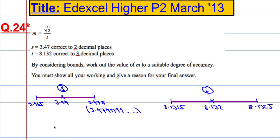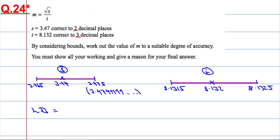and the lowest value it could have been is 8.1315. Let's see what happens when we work out m using the lower bounds. So when we use the lowest bounds, that's the smallest value it could have been for each one, we're going to get the square root of 3.465 over 8.1315.